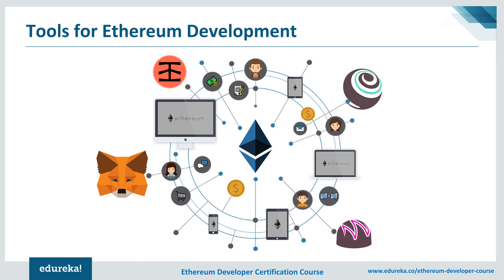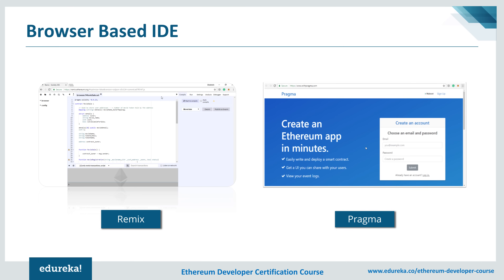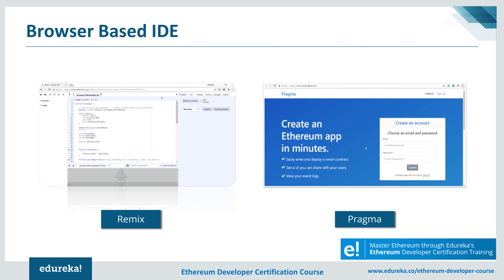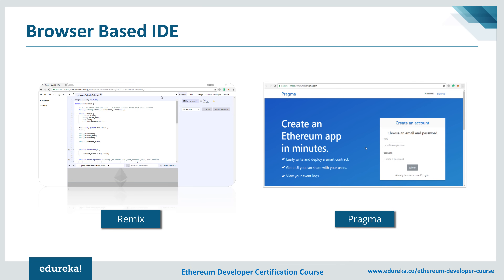First things first: to develop any application we need a programming language. Similarly, to develop a decentralized application we need to first create a smart contract. Ethereum gives you multiple options for writing and deploying smart contracts. The most basic to start with is Remix — it is a web interface that helps you write, deploy, and interact with your smart contracts.